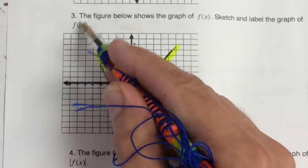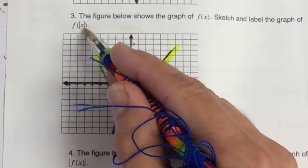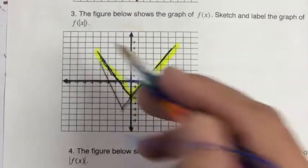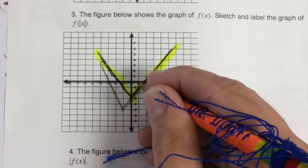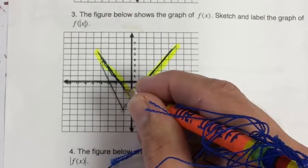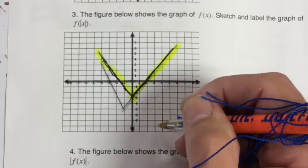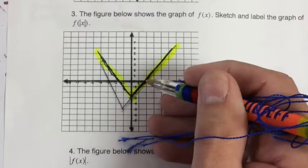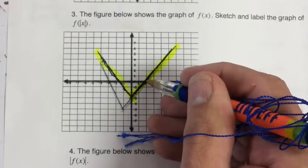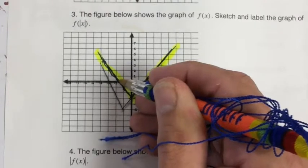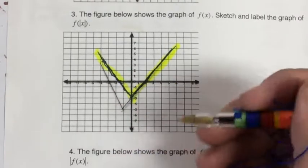So f of the absolute value of negative 1 will be the same as f of 1. So f of 1 is right here. f of negative 1 should be the same y value. f of 2 is right about here. And it should have the same y value as f of the absolute value of negative 2.